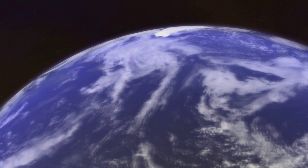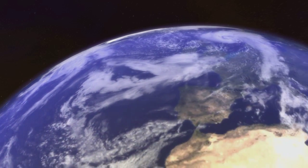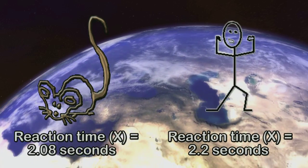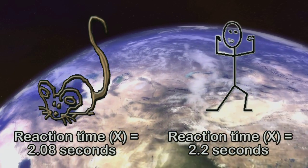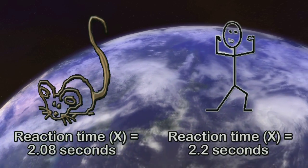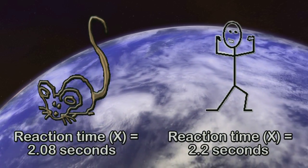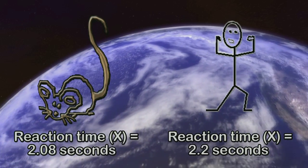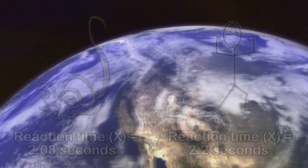Alright, let's make use of our standard scores. Who is more impressive? Seymour the mouse or Aladdin the guy? Seymour the mouse, his reaction time was 2.08 seconds, and Aladdin the guy, his reaction time was 2.2 seconds. Seymour was quicker than Aladdin, right? Not really. That's not really right. Because we cannot compare mice to people.